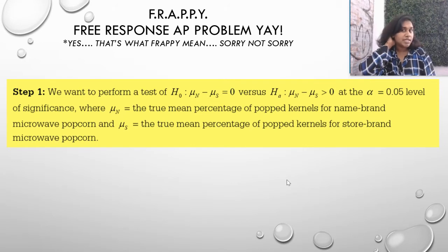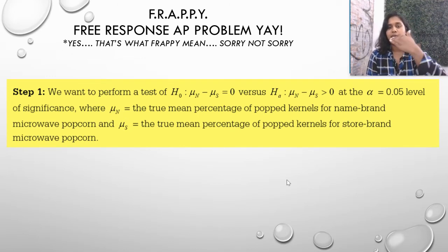State, we want to perform a test where the null hypothesis is the mean of the name brand minus the mean of the store brand equals zero. We talked about that. Versus the alternate where the mean of the name brand minus the mean of the store brand is greater than zero. Again, we talked about that.